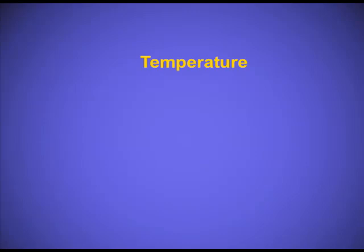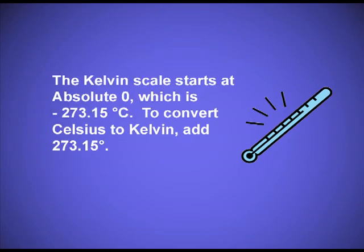Temperature is defined as the degree of hotness or coldness of a body. For these lessons, we will be using temperature measurements in Kelvin, symbol K. The Kelvin scale starts at absolute zero, which is minus 273.15 degrees Celsius. To convert Celsius to Kelvin, add 273.15 degrees.